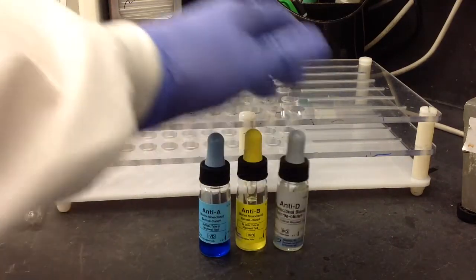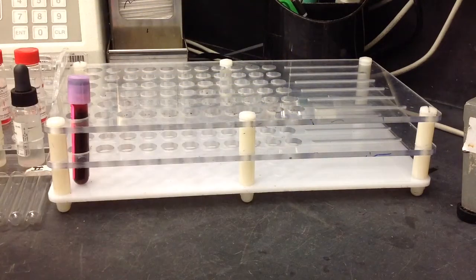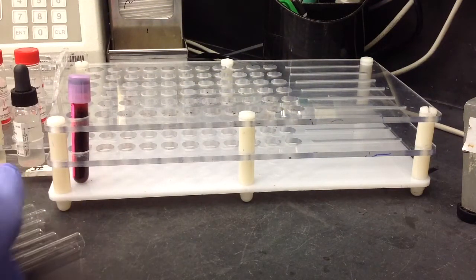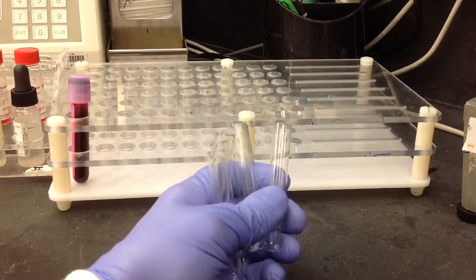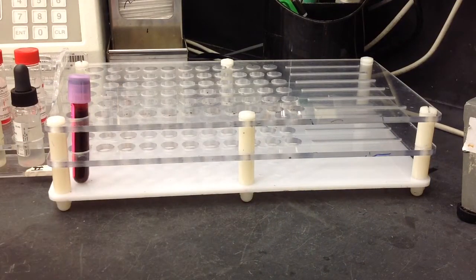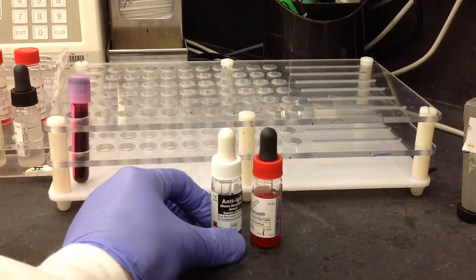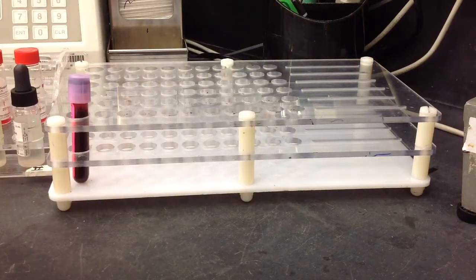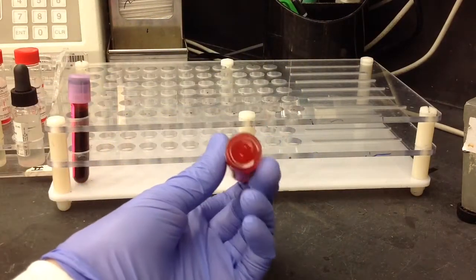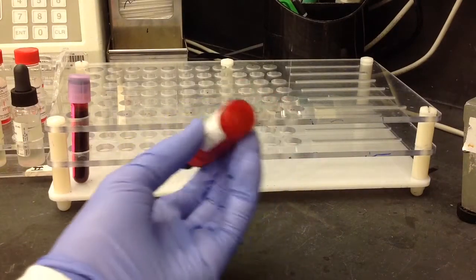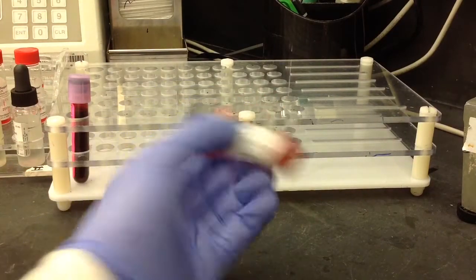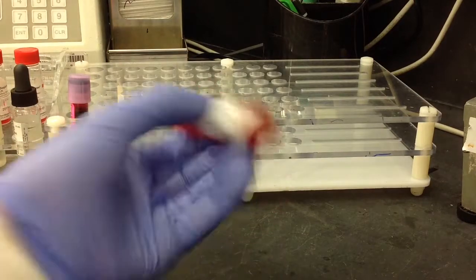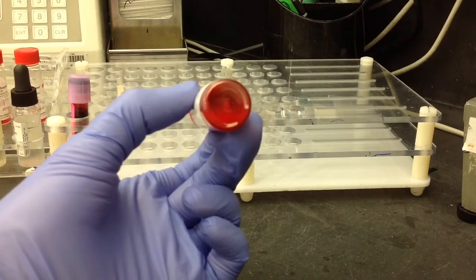And for that, you're going to need your AB and D antiserums, so that'll be for the ABORH. You're going to need some tubes. You're going to also need your AHG and your check cells for the DAT. And just make sure, if the check cells haven't been mixed recently, that you re-suspend all the cells that are stuck on the bottom of the vial there. See I got them off by mixing it.